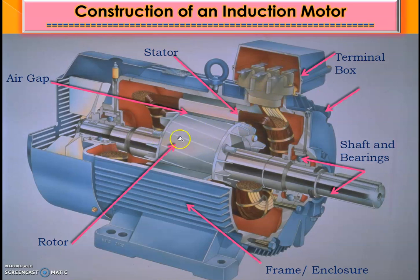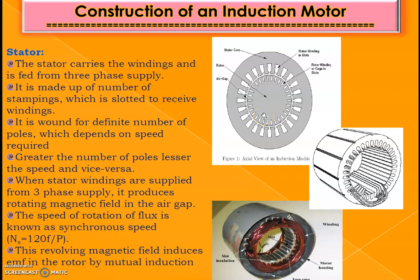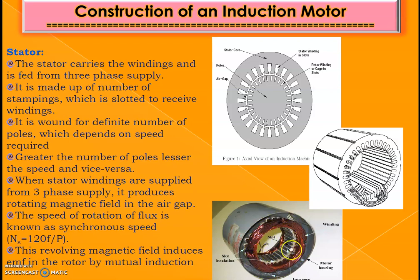In the terminal box, all stator terminals are accessible. Since this is a squirrel cage machine, there are no external rotor terminals. The stator carries the winding which is fed from three-phase supply. Inside the stator slots, the winding is constructed — this is how the winding is placed inside the stator slots. Each slot has insulation, and the enamel-coated winding is wound for a fixed number of poles — it may be a two-pole or four-pole machine.